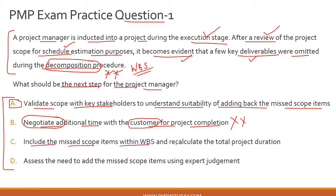Option C says: include the missed scope items within the WBS — which links back to this decomposition procedure — and recalculate the total project duration. This links back to the logic we provided for option B: with this exercise, where you include the missed scope items and calculate the total project duration, you now have a definitive answer as to whether the project is on track, off track, or highly off track with respect to the baseline schedule. So in option C you are basically doing an assessment. This looks like a good option; let's hold it for now.